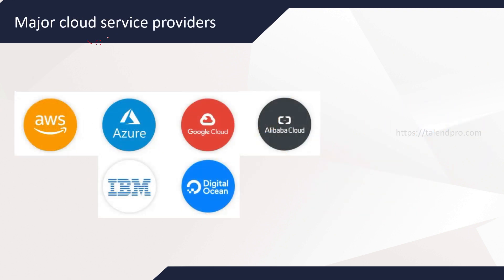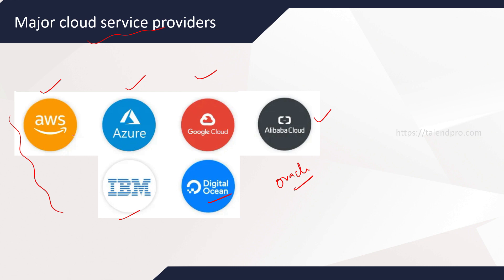Now let's look at some of the major cloud service providers. Everybody is aware of AWS, Azure, and Google Cloud. However, there are a few more vendors pitching into this area — Alibaba Cloud, IBM Cloud, Digital Ocean, Oracle, and Rackspace, among others. These are the major ones, and we will be covering AWS as primary, with some Azure, and in future I'll add Google Cloud related videos as well.